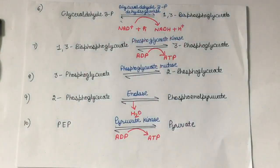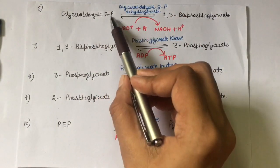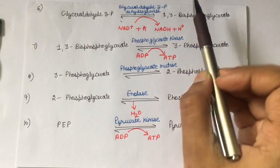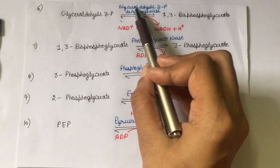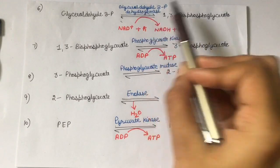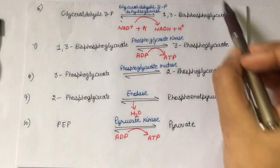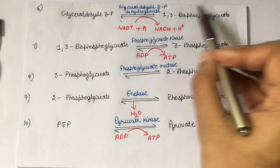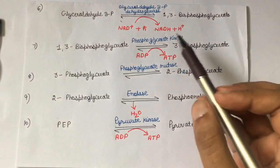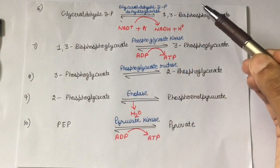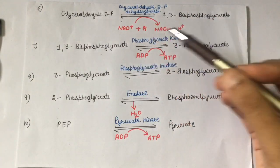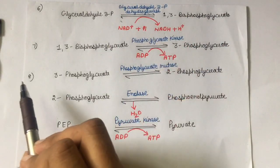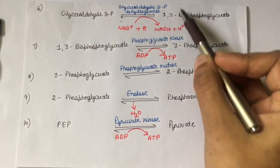Glyceraldehyde-3-phosphate gets converted into 1,3-bisphosphoglycerate with the help of the enzyme glyceraldehyde-3-phosphate dehydrogenase. These are the steps of the energy releasing phase, where energy is released in the form of ATP and NADH. In the first phase, ATP was being used; that's why it is called the energy utilizing phase, and this is the energy releasing phase.